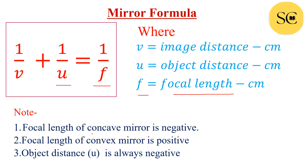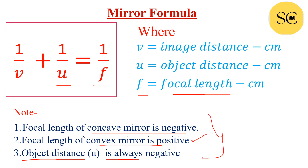Focal length of a concave mirror is always negative. Focal length of a convex mirror is always positive. Object distance U is always taken negative because the object is always placed at the left side of the mirror. When we solve numerical questions, we must know these points; without these, the numerical questions can be wrong.